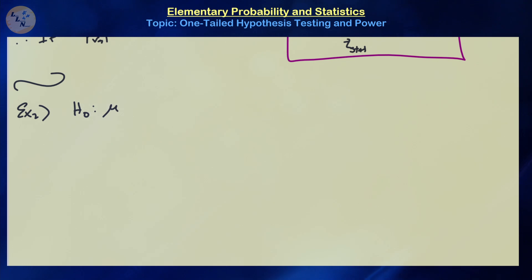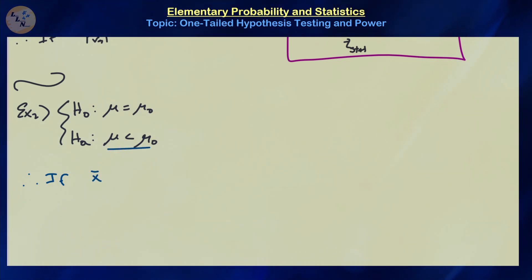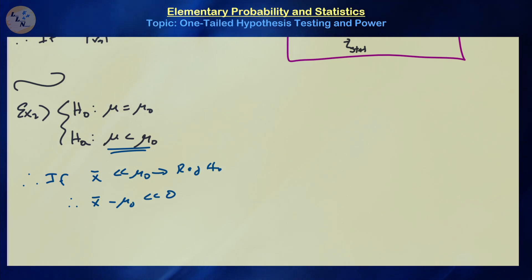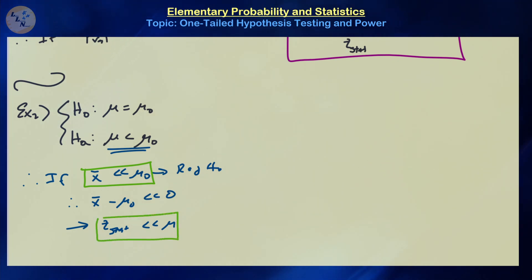Now let's look at how this changes direction. Assume the null hypothesis is mu equals mu zero, but the alternative is mu less than mu zero. If x-bar is significantly less than mu zero, we're going to be rejecting the null hypothesis. If x-bar is significantly less than mu zero, then x-bar minus mu zero is significantly less than zero, which means the z-test statistic is also going to be significantly less than zero.